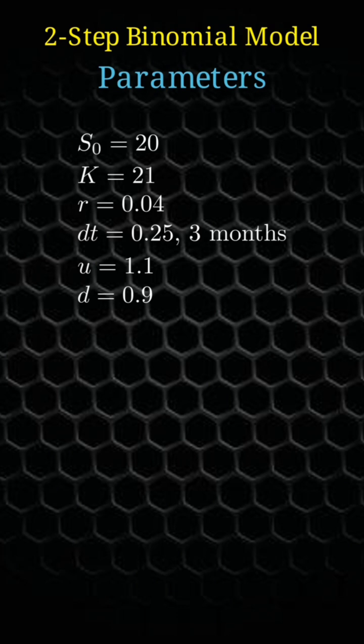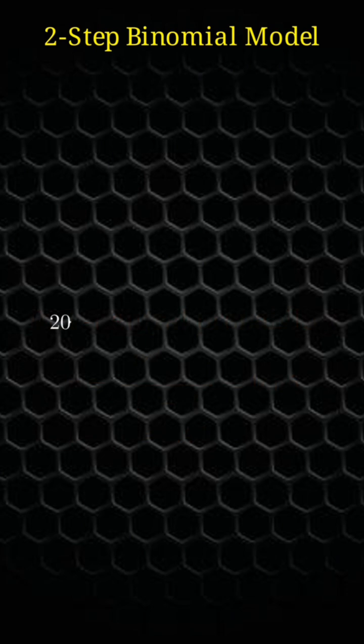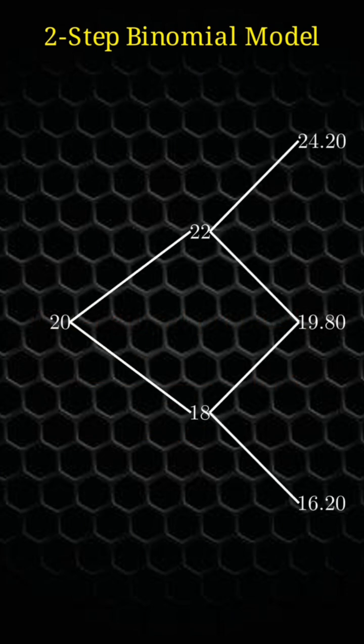We calculate the risk-free probability measure using this formula. The probability by which the price goes up is 0.55 and the other way is 0.45, and the scenario of the price movement is given like this one.